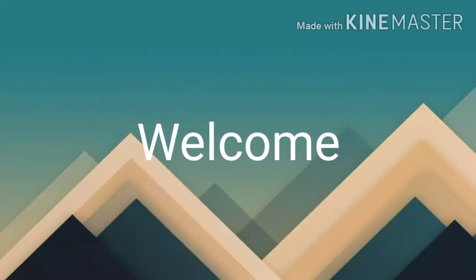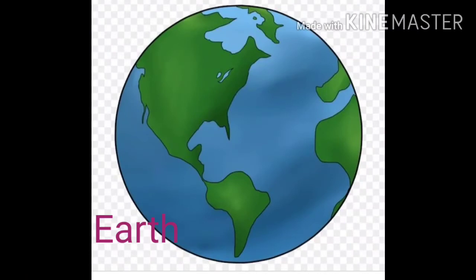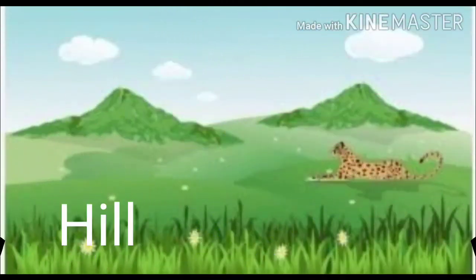Welcome children, it is our concept time and today we are going to learn about earth. It is a picture of earth. Blue portions are called water forms and green portions are called land forms. Today we are going to learn about different types of land forms.